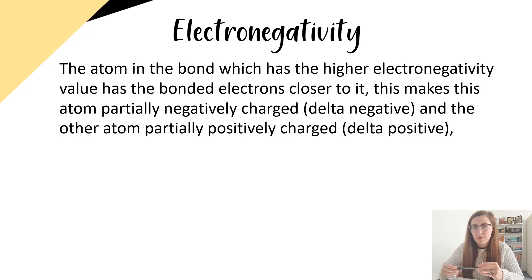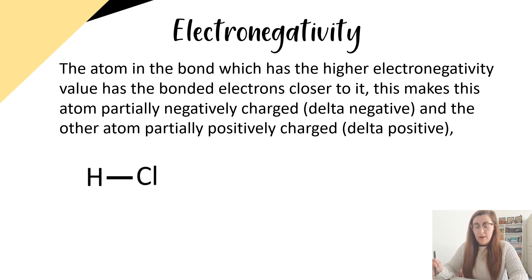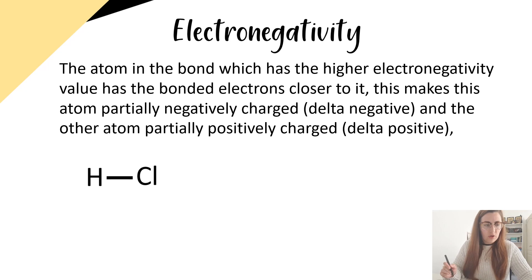At a higher level, you have to be able to annotate electronegativities on bonds and represent where in the bond the electrons are lying. For example, if we look at hydrogen and chlorine, they have a covalent bond between them — that covalent bond represents two electrons. We can look up the electronegativity values of hydrogen and of chlorine.